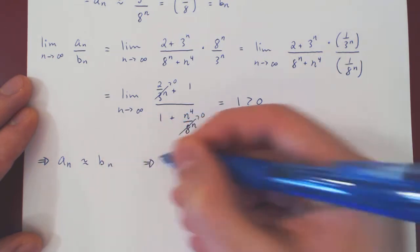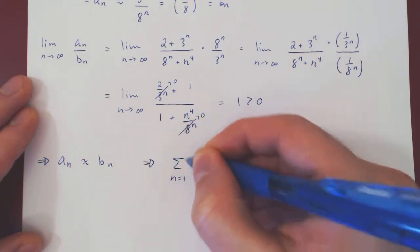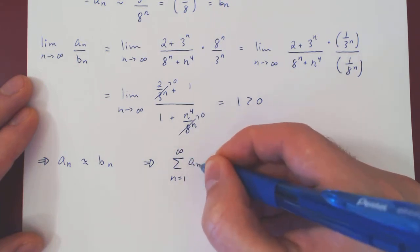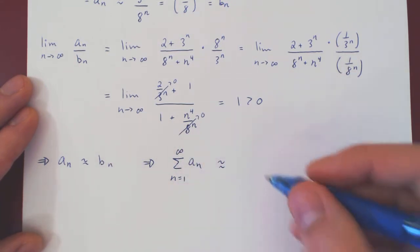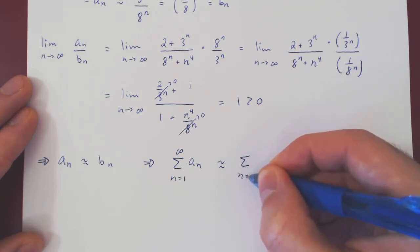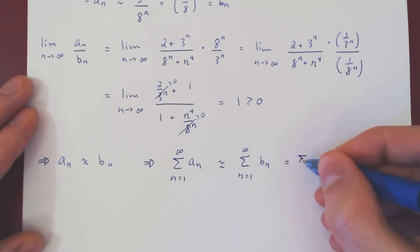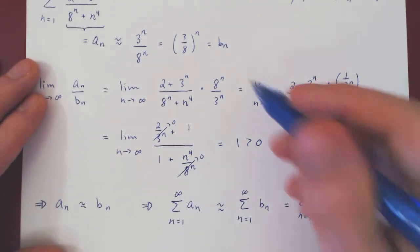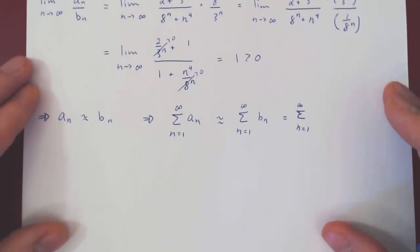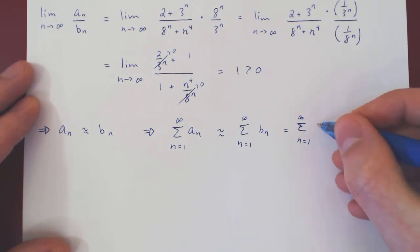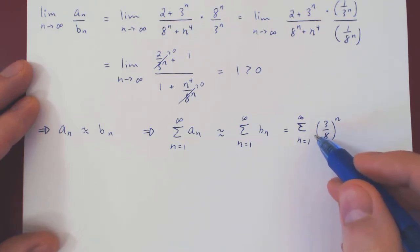So if we sum a_n from 1 to infinity, this will be approximately summing b_n from 1 to infinity. And now we can of course replace b_n by 3 over 8 to the n. And again what we have here is a simple geometric series. We are summing consecutive powers of a fixed number, 3 over 8.